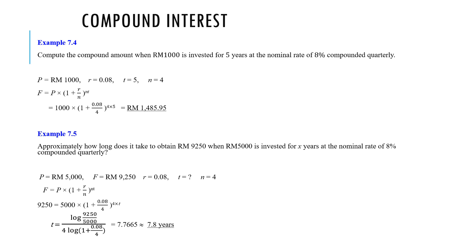If you don't know how to put this into the calculator, please reach out to me and I'll teach you. Do it step by step: 0.08 divided by 4, then add 1, then raise the whole answer to the power of 20, then multiply by 1,000. It's actually better to do it one step at a time.